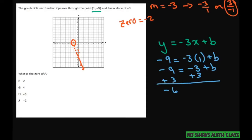So your equation would be y equals -3x plus b—not b, but -6, minus 6. Let's just write that. So that's your equation.